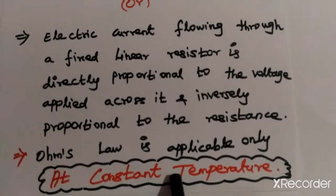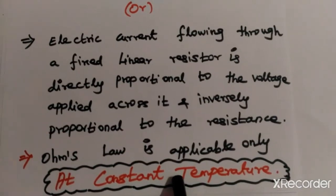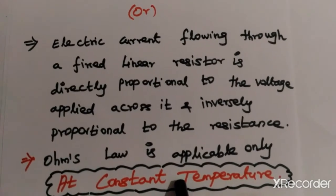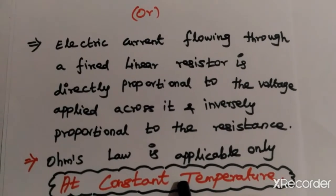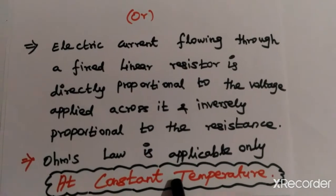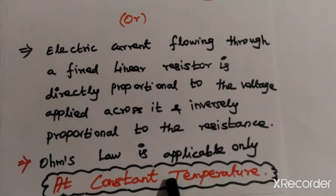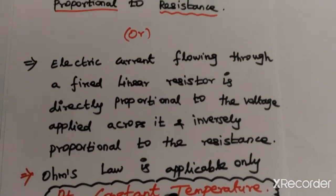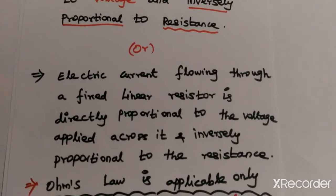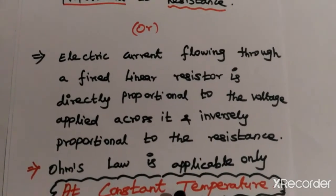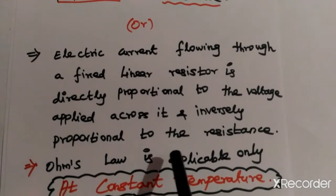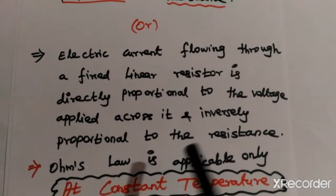Ohm's Law states that the current flowing through the circuit is directly proportional to the voltage across the resistance and inversely proportional to the resistance. This law is only applicable at constant temperature — this is a very important condition. If temperature varies, the resistance also varies, and therefore Ohm's Law is not applicable.